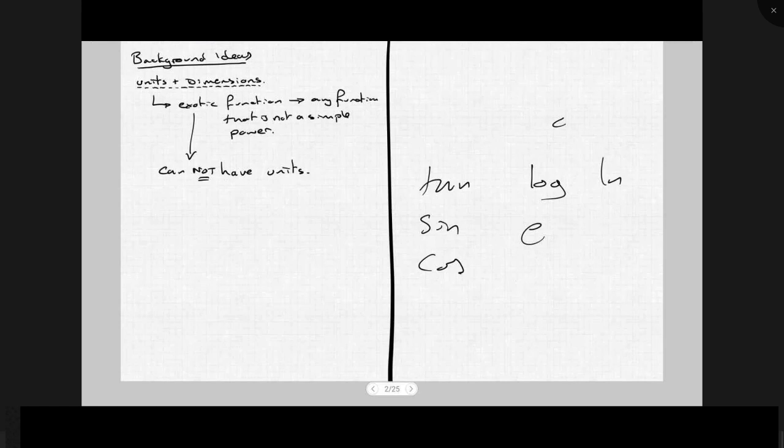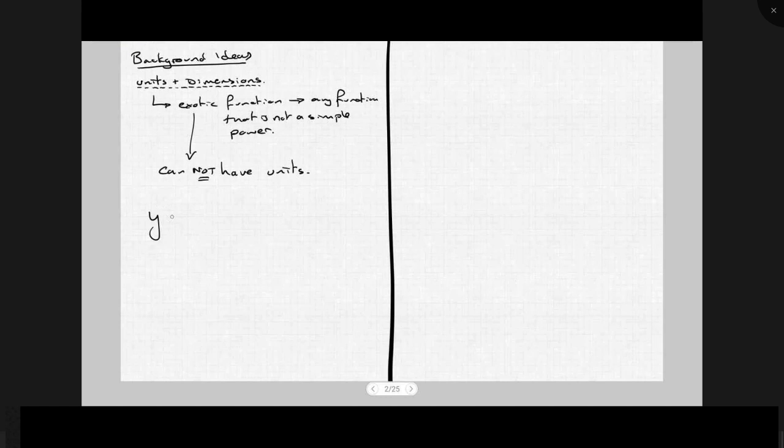So for example, you will never see in physics an equation like this. If y is a position, say y equals sine t. In other words, something is varying as a sine function, as sinusoidally in time. You might see y is proportional to sine t, but you won't see this.